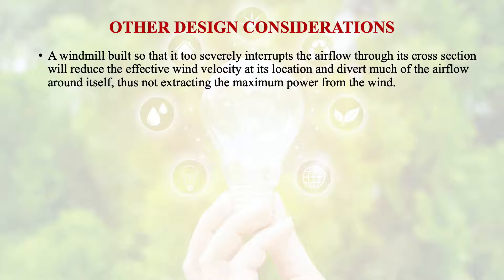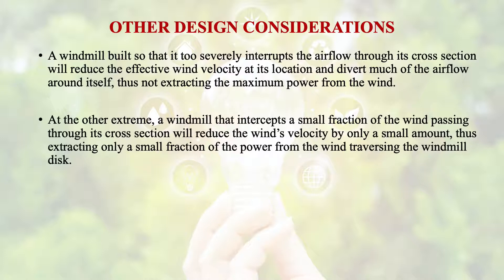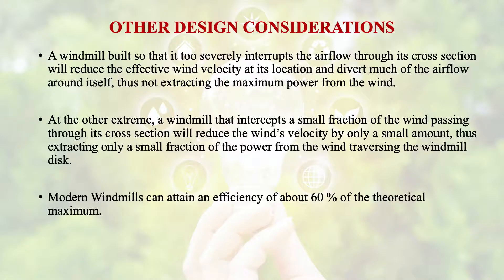Generally, windmills are built such that if they too severely interrupt the airflow through their cross section, they will reduce the effective wind velocity at that location and divert much of the airflow around themselves — thus reducing the maximum power extractable from the wind. At the other extreme, a windmill that intercepts only a small fraction of wind passing through its cross section will extract only a small fraction of the power. Modern windmills can attain an efficiency of about 60% of the theoretical maximum.